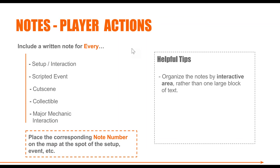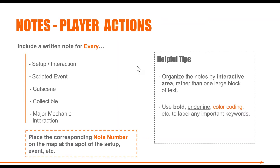Some helpful tips: you can organize notes by interactive area. You can see this in the example maps included in the assignment — rather than going one through 30 straight, you can break it up into interactive spaces. For example, here is the generator area and all its notes, then the control panels section with all its notes. It's easier to digest in smaller chunks. Also, use formatting to help — bold, underline, color code things, label keywords, use italics. Make things stand out and easy to understand.